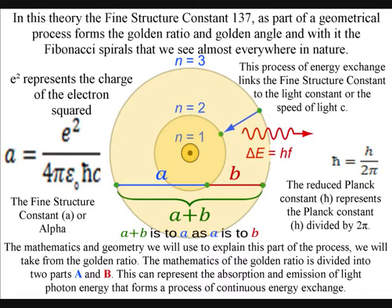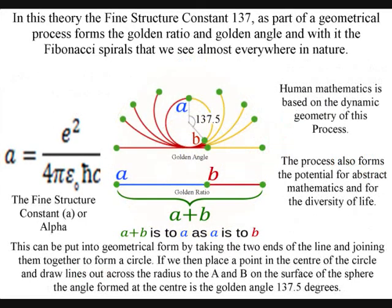This can be put into geometrical form by taking the two ends of the line and joining them together to form a circle. If we then place a point in the center of the circle and draw lines out across the radius to the a and b on the surface of the sphere...